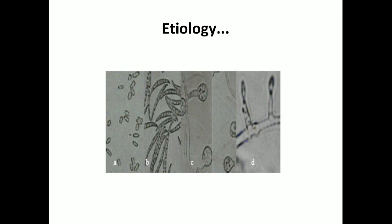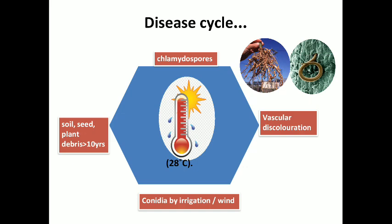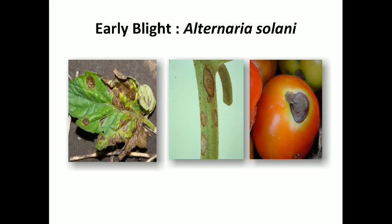In case of the disease cycle, chlamydospores cause primary infection in wilt, surviving in soil, seed, and plant debris — in plant debris they can survive for more than 10 years. Root knot nematode population and temperature around 28 degrees Celsius favor disease development, showing symptoms like yellowing, wilting, and vascular discoloration. Secondary infection occurs via conidia spread by irrigation or wind.